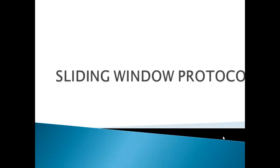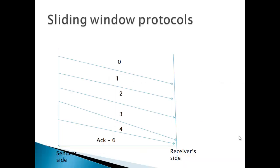Hello everybody, today I am going to talk on sliding window protocols. In the sliding window method, multiple frames are sent by the sender at a time before it gets acknowledgement. Multiple frames sent by the source are acknowledged by the receiver using a single acknowledgement frame. Sliding window refers to imaginary boxes that hold frames on the sender and receiver. It provides the upper limit on the number of frames that can be transmitted before requiring an acknowledgement.